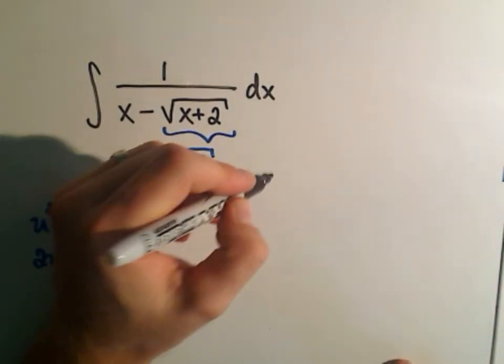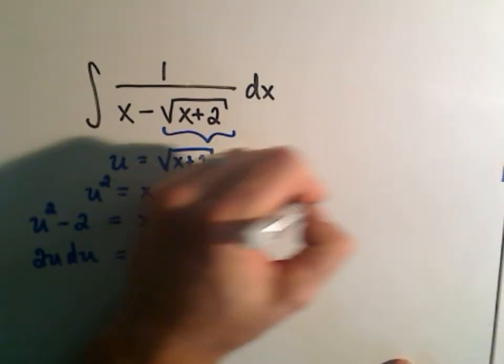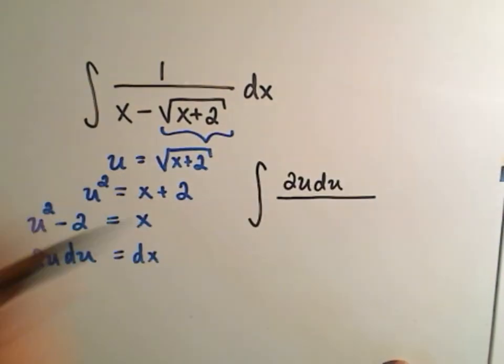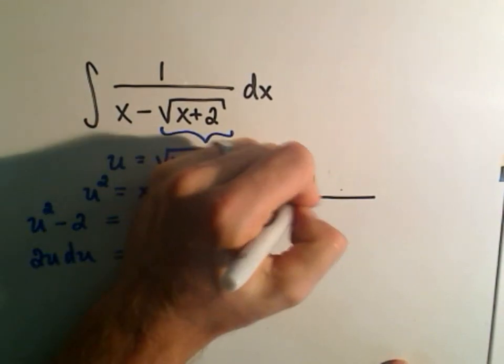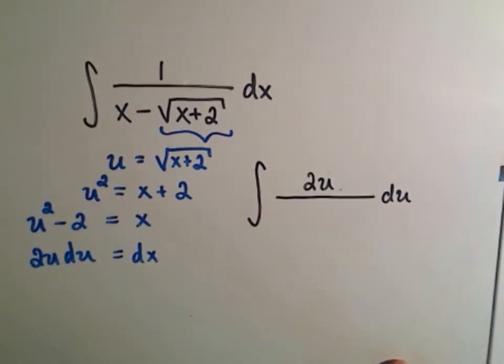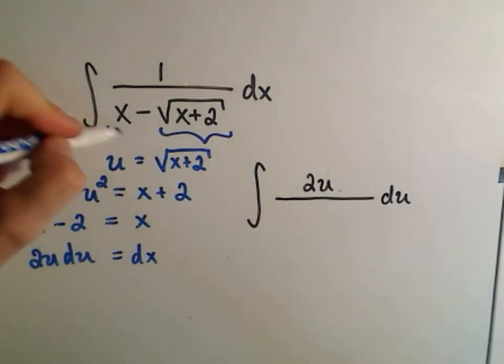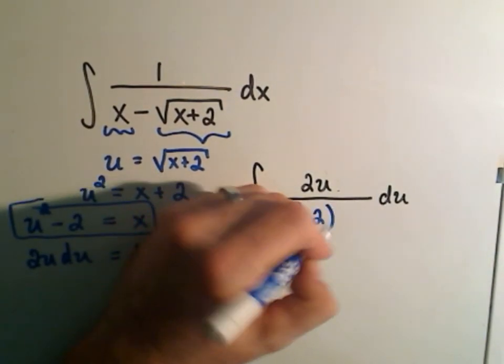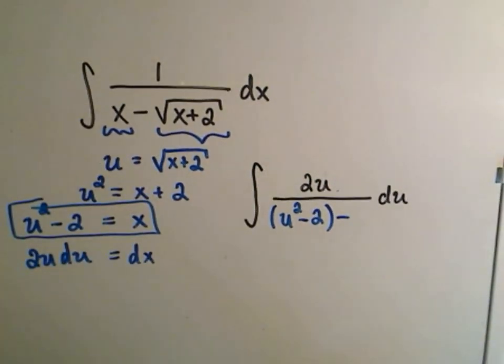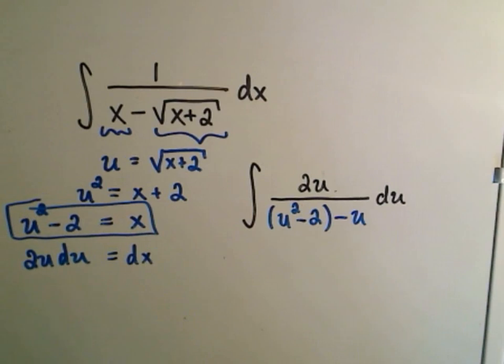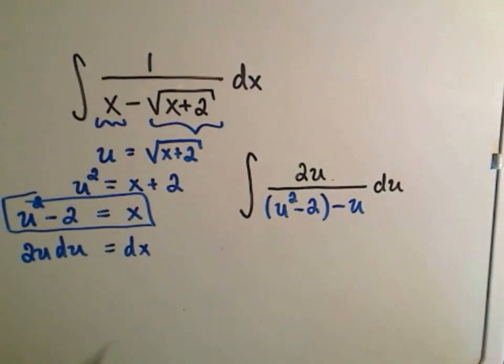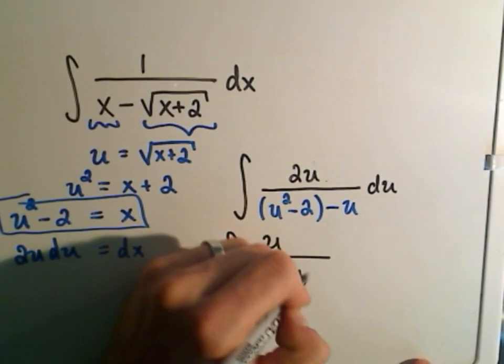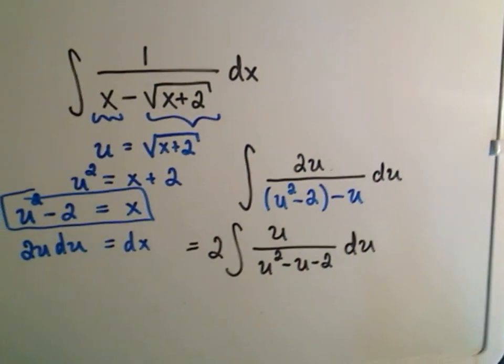Alright, so if I replace everything here, it looks like I'm going to get the integral. The dx is going to be my 2u du. I always like to pull my du's off to the side, so I'm going to write it as 2u du. We know that x is equal to u squared minus 2, so I'll plug that in. And then we have minus the square root of x plus 2, but that's what we called u in the first place. So really what I have here now is the integral 2 times u over u squared minus u minus 2 du. And that's what I now have to start working on.